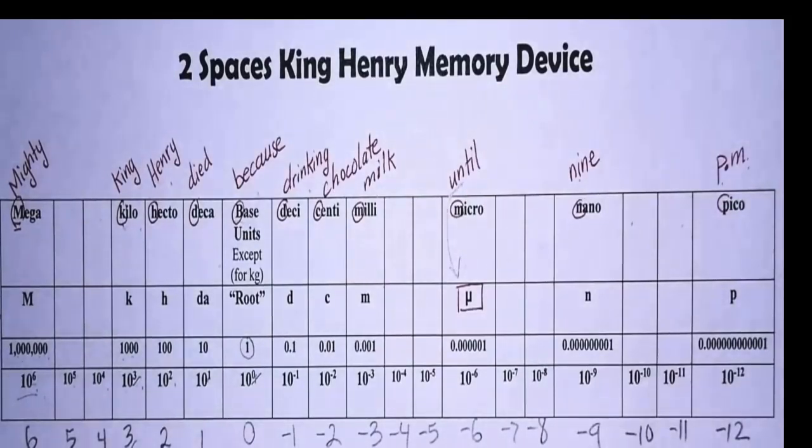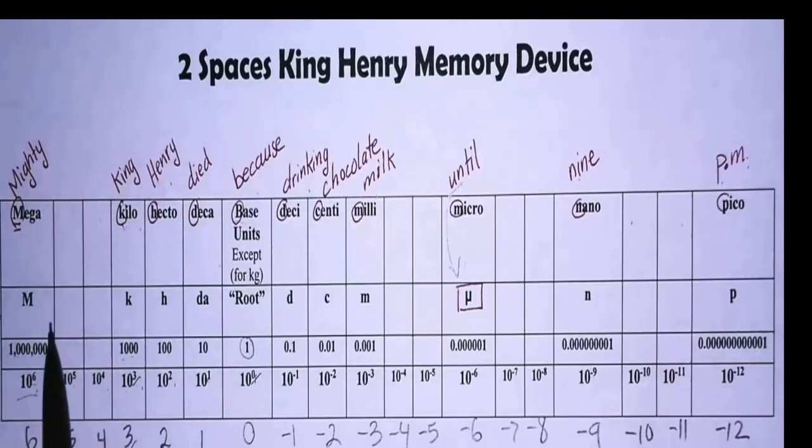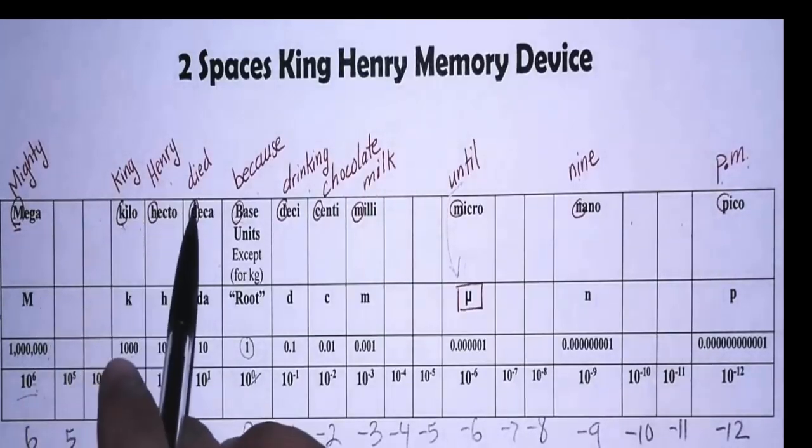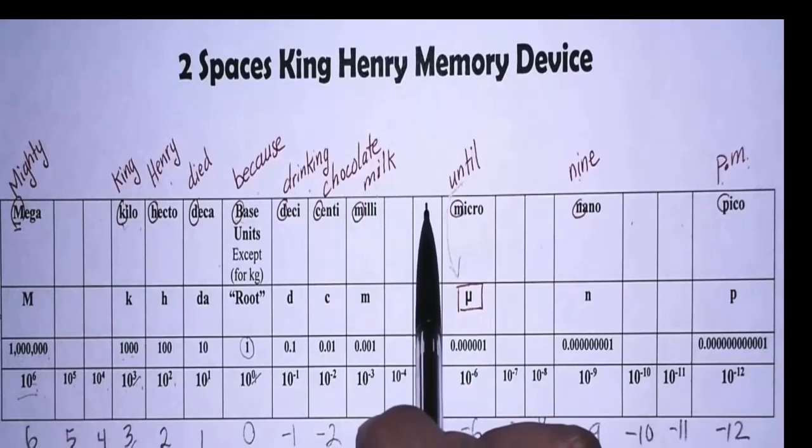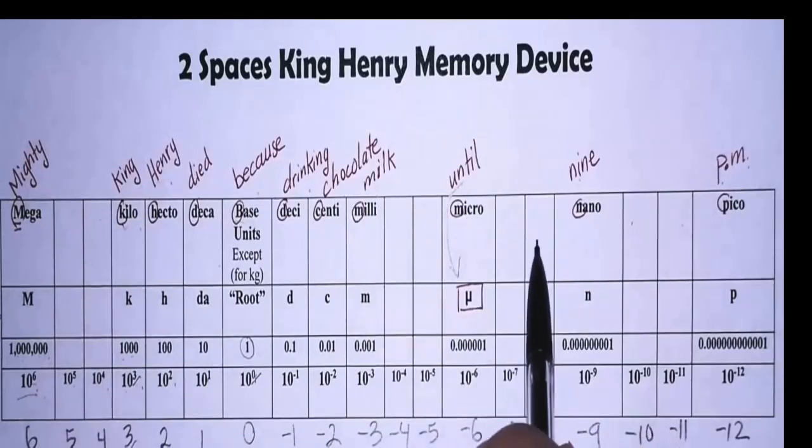And that's the beauty of this memory device. Mighty two spaces, King Henry died because drinking chocolate milk two spaces, until two spaces, nine two spaces P.M.